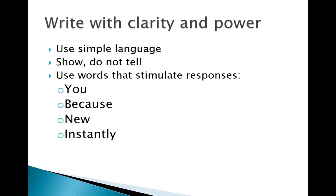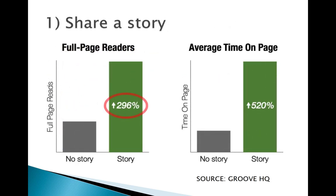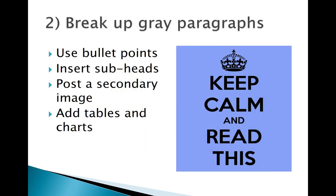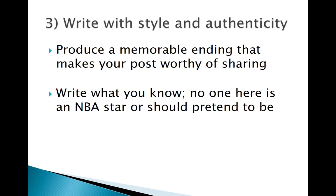Write with clarity and power. You can use words like 'you,' 'because,' 'new,' 'instantly' — these are the types of words that work well in a blog post but not other forms of communication. Share a story: if you have a story, you get more interaction. Break up those paragraphs — 400 to 500 words is a long time to read, so use subheads, a secondary image, or tables and charts. Write with style and authenticity, and write what you know.